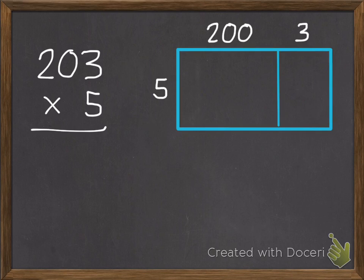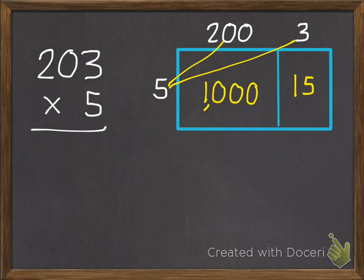We multiply the ones first. 5 times 3 is 15. We don't have any tens, so we multiply the hundreds. 5 times 200 is 1,000. Then we add our two parts together, which is 1,015.